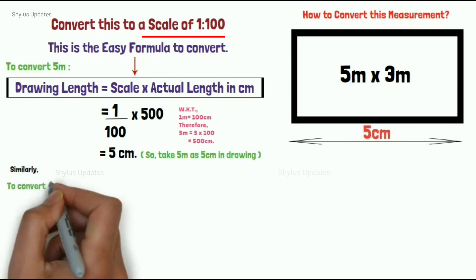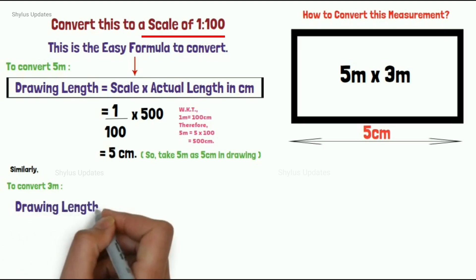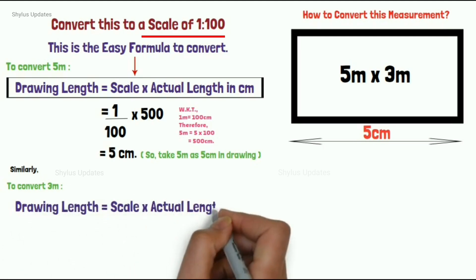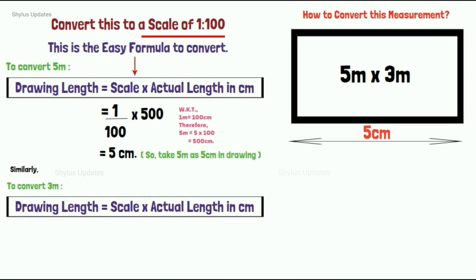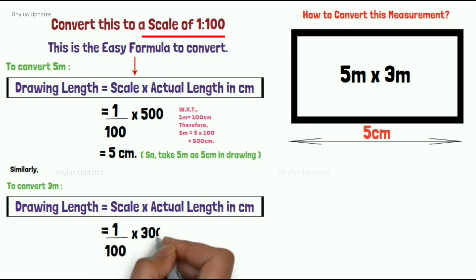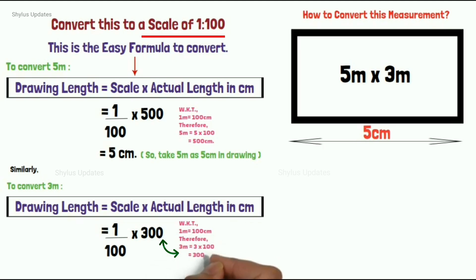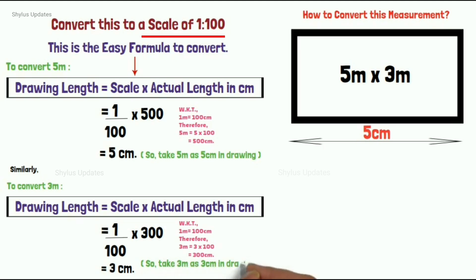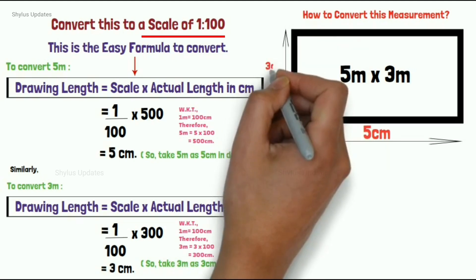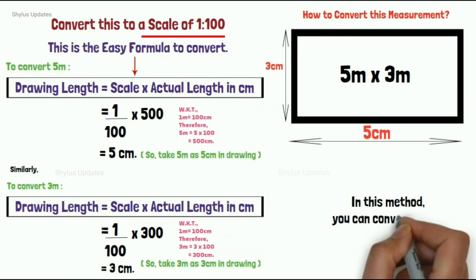Similarly, to convert 3 meters, use the same formula: Drawing length = scale × actual length in centimeters. Scale is 1 to 100, so write 1/100 × actual length. Actual length is 3 meters. Convert to centimeters: 3 meters = 3 × 100 = 300 cm. Doing the calculation: (1/100) × 300 = 3 cm. So take 3 meters as 3 centimeters in the drawing. In this method, you can convert easily.